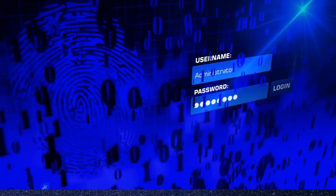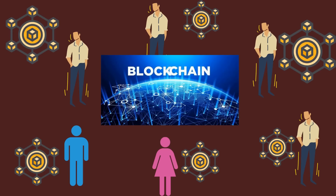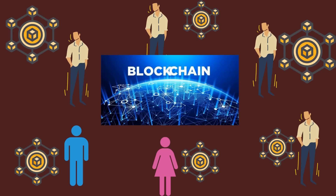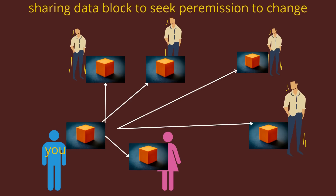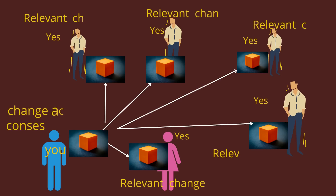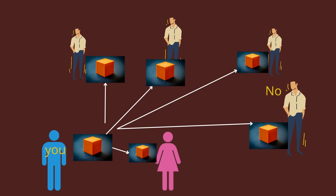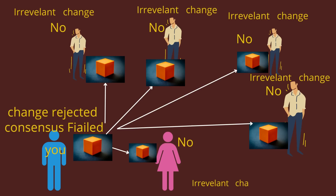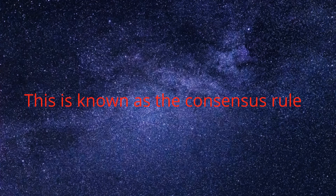There is another layer of added security in the blockchain. All users in the network have an entire copy of that blockchain. If you want to change your own single block, you will have to seek the permission of all the users in the network by sharing with them the block in which you want to implement the changes. It will be up to the users in the network to decide through voting whether this change is relevant and will not tamper the blockchain data. If the majority of people agree and vote in your favor, only then can the data be changed; otherwise, the change will be rejected. This type of voting through a consensus to allow or reject a change in a block is known as the consensus rule.